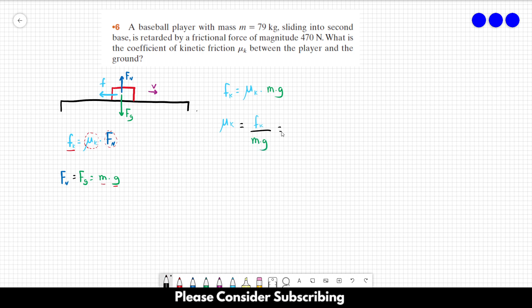And this is equal to, let's see, 470 divided by 79 times 9.8, and this will be equal to 0.61.